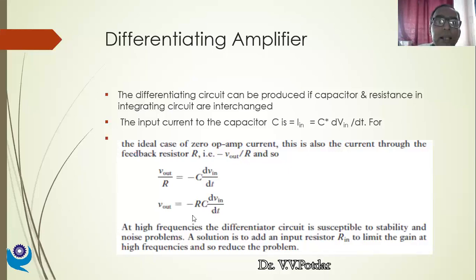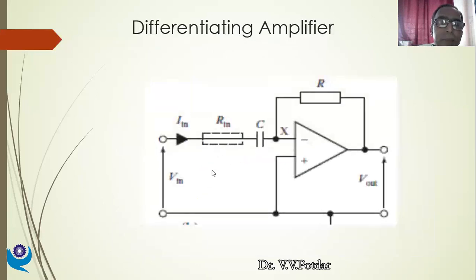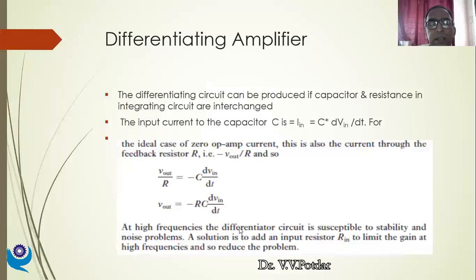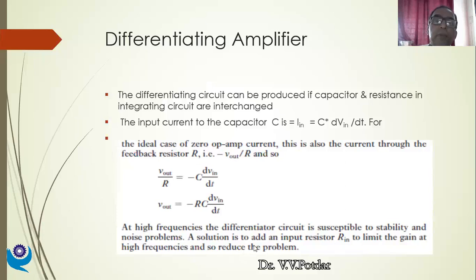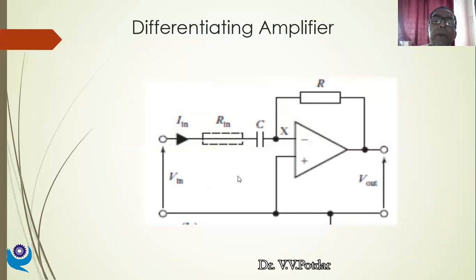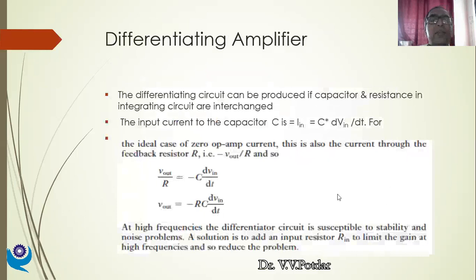The significance of the dotted R_in: at high frequencies, the differentiator circuit is susceptible to instability and external noise problems. To suppress this instability and noise, the solution is to add an input resistor R_in to limit the gain at high frequencies. This R_in acts as a stabilizing resistor.